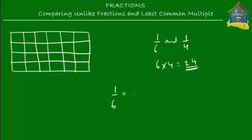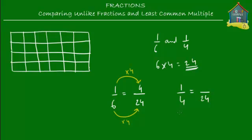One-sixth becomes something over 24. Since 24 equals 6 times 4, we multiply the numerator by 4 to get 4, so one-sixth equals 4/24. For one-fourth, we need something over 24. Since 24 equals 4 times 6, we multiply the numerator by 6 to get 6, so one-fourth equals 6/24.